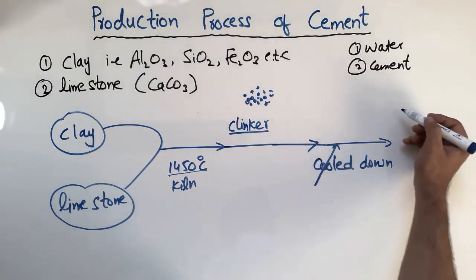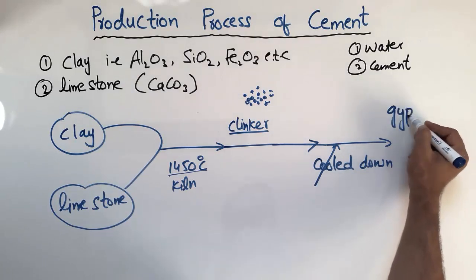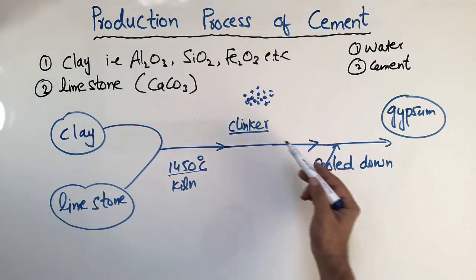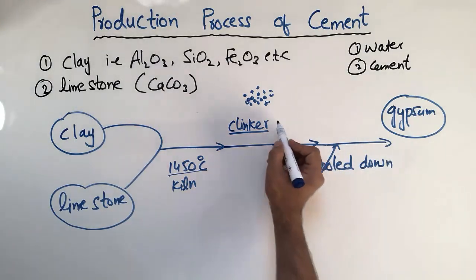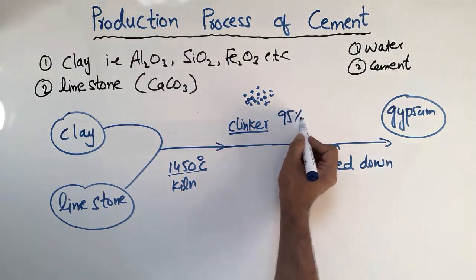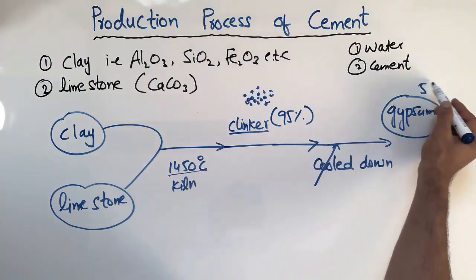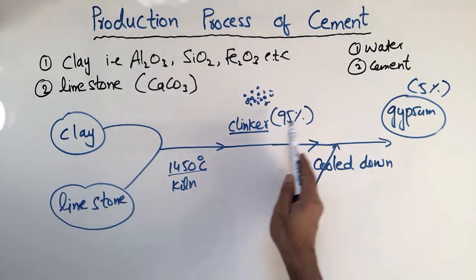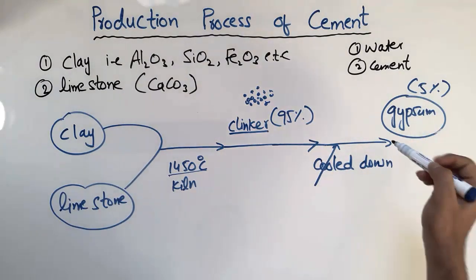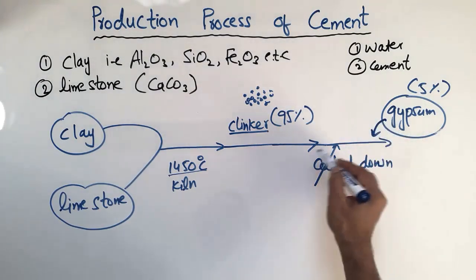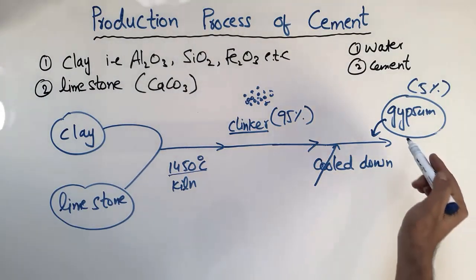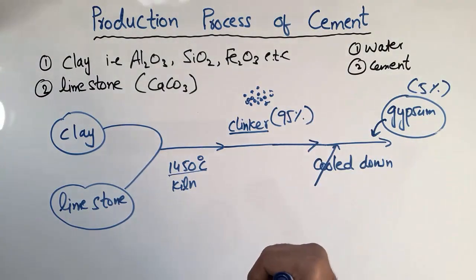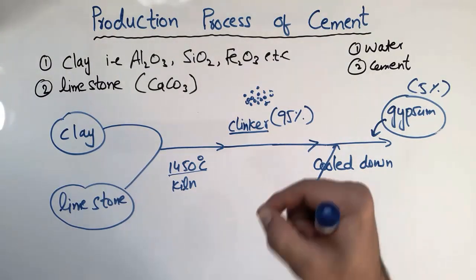After the clinker has been cooled down, we add gypsum. Cement is 95% clinker and 5% gypsum, making a total composition of 100%. We add gypsum because we want to increase the initial setting time of the cement and to reduce the hydration reaction.